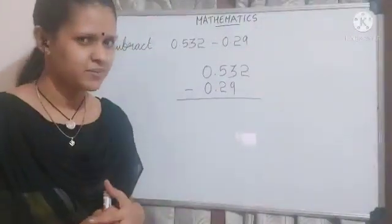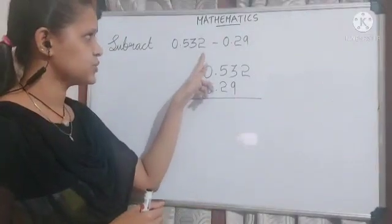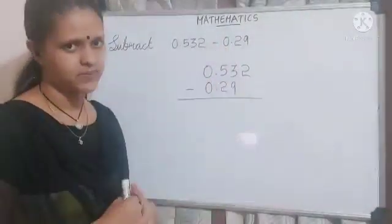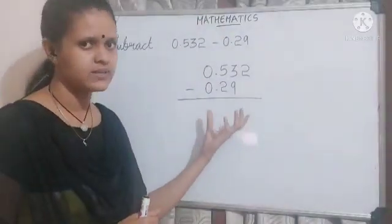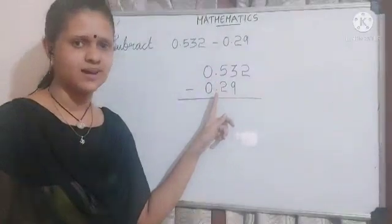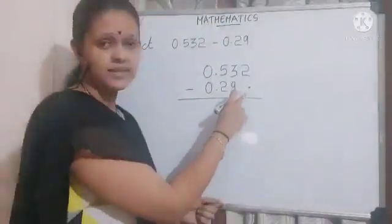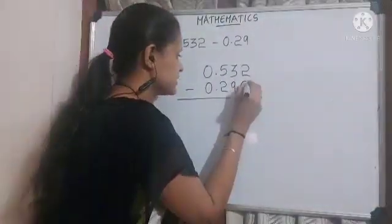Let's do one more example. Subtract 0.532 minus 0.29. Here we have aligned the given decimal numbers and the decimal points. There is an empty place value, so we put 0.